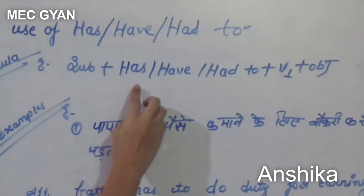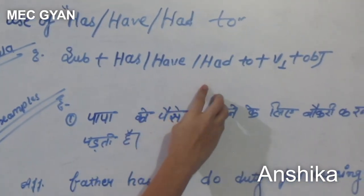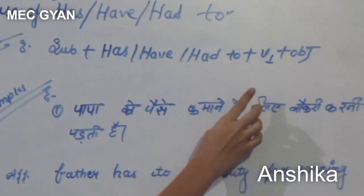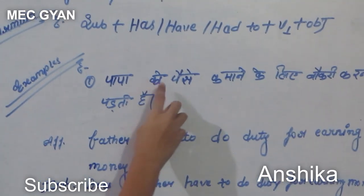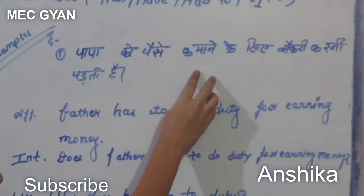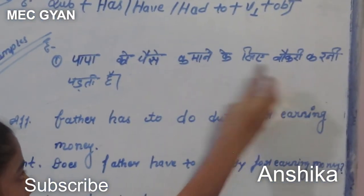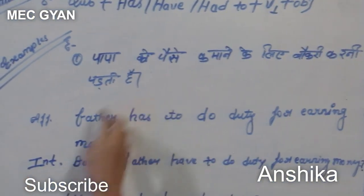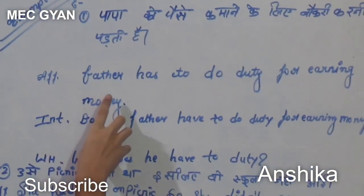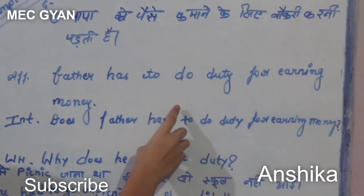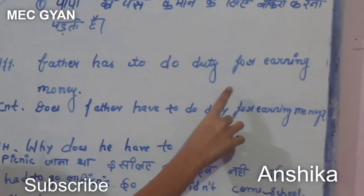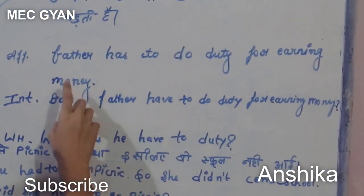The formula is: Subject plus 'has to' / 'have to' plus V1 plus object. For example: Father has to do duty for earning money.